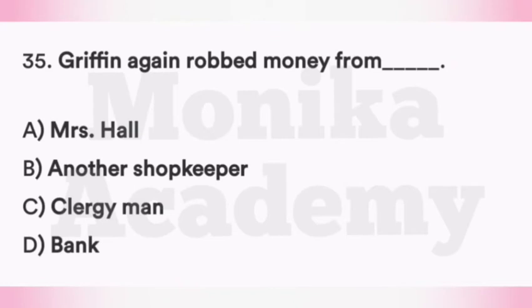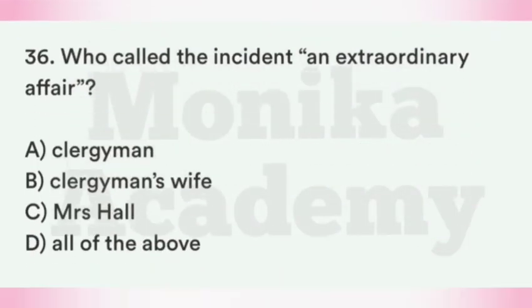Question 35: Griffin again robbed money from ___. First time Griffin ने theatrical company store से पैसे चोरी किए थे. यहाँ second time पूछा जा रहा है. Option A: Mrs. Hall. Option B: Another shopkeeper. Option C: Clergyman. Option D: Bank. The correct answer is C, clergyman — Griffin ने invisible होकर clergyman की study से पैसे चोरी किए.